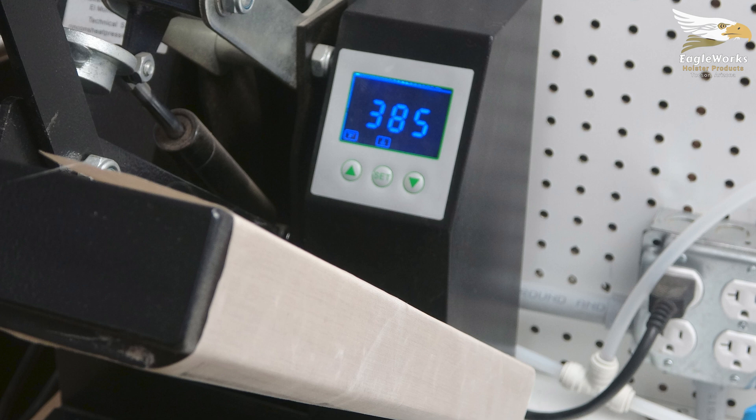You'll need to play around with settings to find what works best for you with your equipment and material. Our press is set to 385 degrees with a cycle time of 110 seconds. Again, these settings can vary based on your equipment, location, and material.